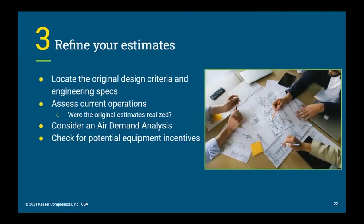Step three is to refine your estimates. If your ballpark estimates are appealing, take a closer look. To do this, find the original design conditions — operating pressure and airflow are the main drivers of purchase price and operating costs. Note how many blowers you use and what speed they're running at. You may not need to replace all of the blowers at once; if you leave an existing unit for backup, you can reduce your overall capital costs and return on investment. If the design conditions are nowhere to be found, consider an air demand analysis — Kaeser can connect data logging equipment to measure the airflow, operating pressure, kilowatt consumption, and operating temperatures, allowing us to effectively size a new station for your process.